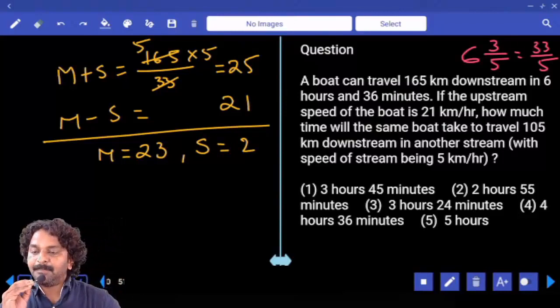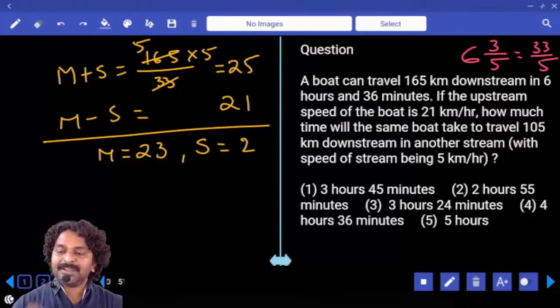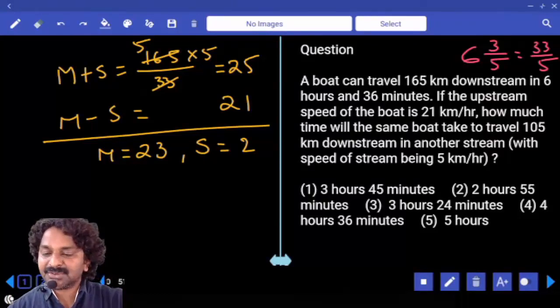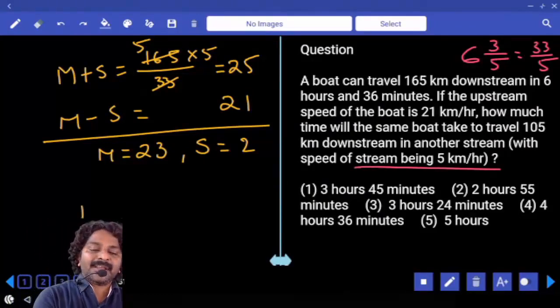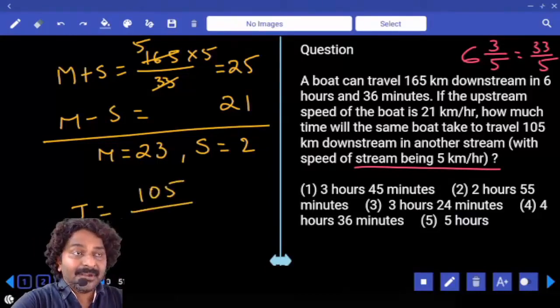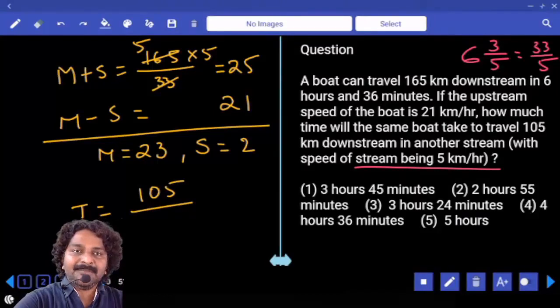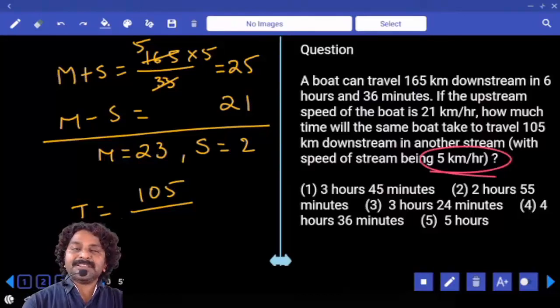How much time will the same boat take to travel 105 kilometers downstream in another stream where the stream speed is equal to 5 kilometers per hour? We need to calculate time to cover 105 kilometers in downstream, that is M plus S. M was 23, stream speed is 5. 23 plus 5 is 28.